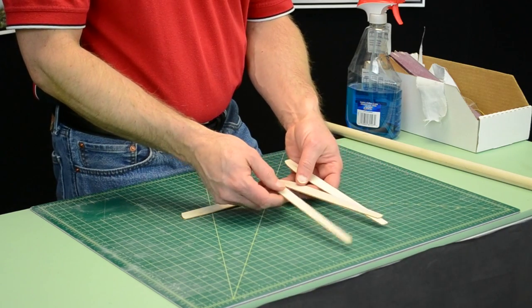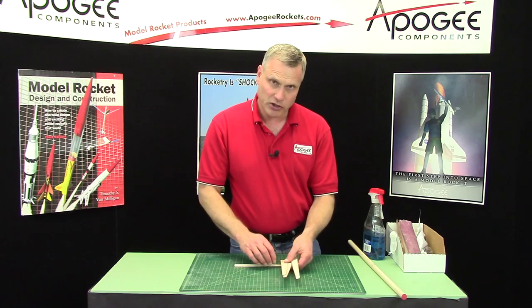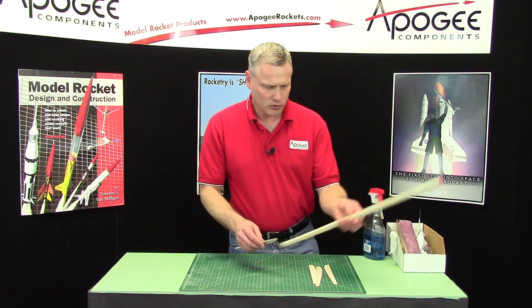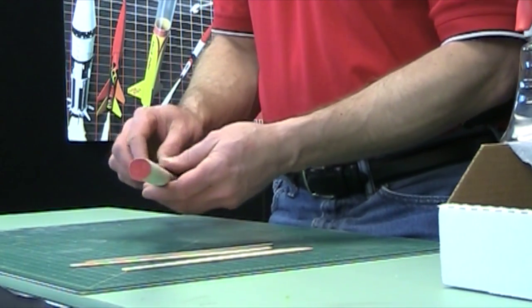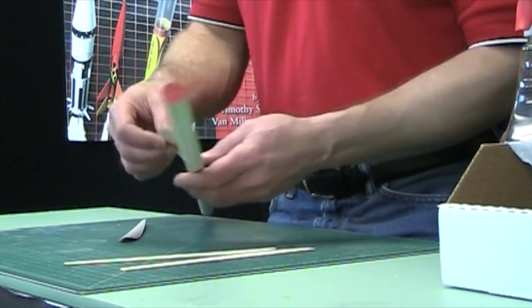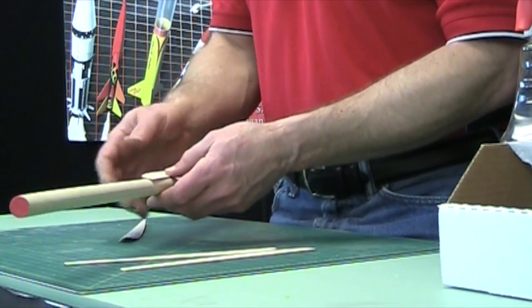These are just basic balsa wood blades and we need to curve them. To do that we're going to wrap them around a wood dowel. Now you can't take just dry balsa wood and wrap it around a dowel because it's going to crack.